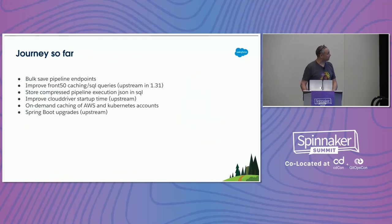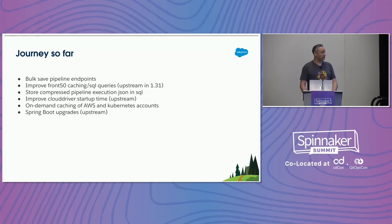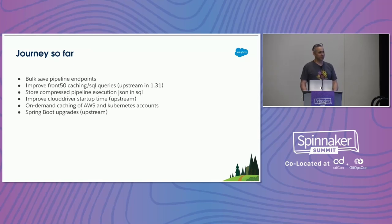Here are some of the not-so-recent fixes we've made. The ones marked upstream have gone upstream. The out-of-the-box endpoint for saving pipelines only lets you save one at a time, but with as many pipelines as we have and how often they change, we needed bulk saves. Front50 is the repository for things like pipeline configuration and applications. To avoid hitting the database constantly, Front50 has an in-memory cache, and we made the caching and SQL queries more efficient — those are merged into Spinnaker 1.31.